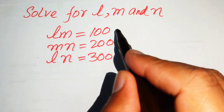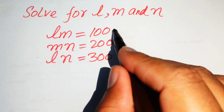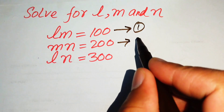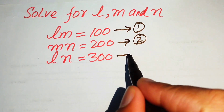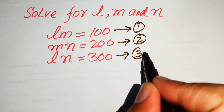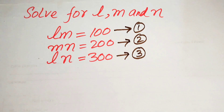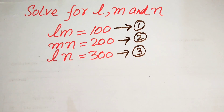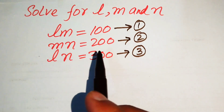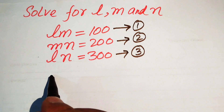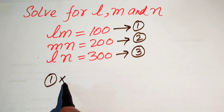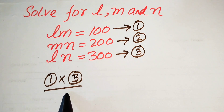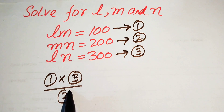Here we call this equation number 1, this equation number 2, and this equation number 3. The very first step we are going to do is multiply equation number 1 by equation number 3, divided by equation number 2.